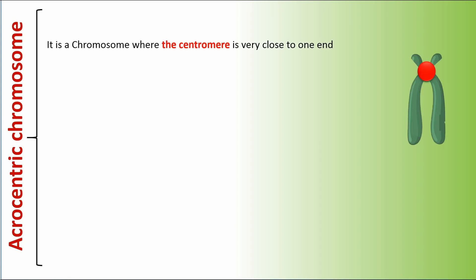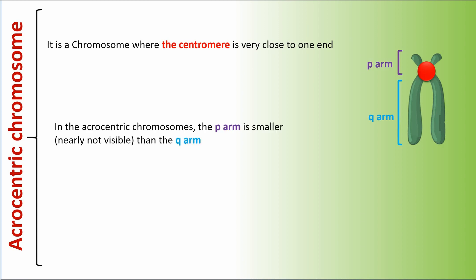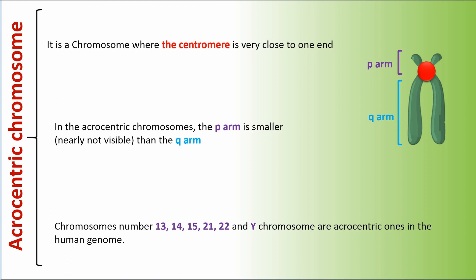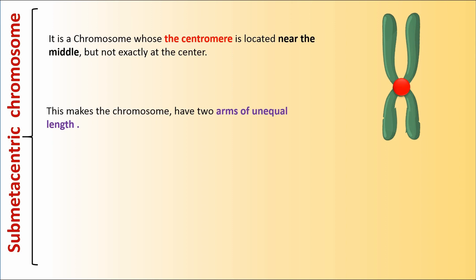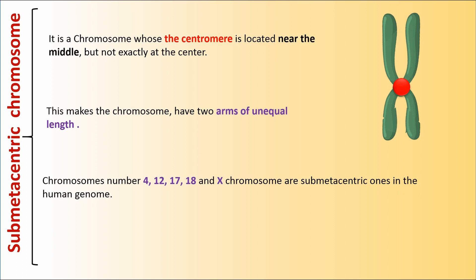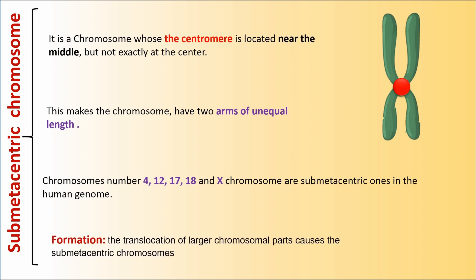An acrocentric chromosome is one where the centromere is very close to one end. In acrocentric chromosomes, the p arm is smaller, nearly not visible, than the q arm. Chromosomes 13, 14, 15, 21, 22, and the Y chromosome are acrocentric ones in the human genome. A submetacentric chromosome is one whose centromere is located near the middle but not exactly at the center, making the chromosome have two arms of unequal length. Chromosomes 4, 12, 17, 18, and the X chromosome are submetacentric ones in the human genome. The translocation of larger chromosomal parts causes submetacentric chromosomes.